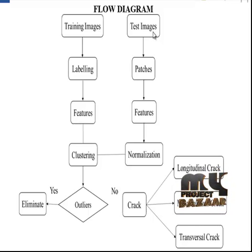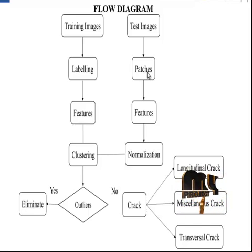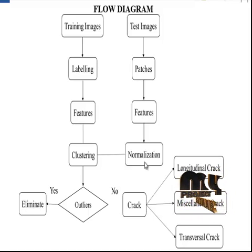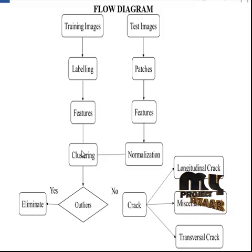In the testing process, test images were obtained and divided into several patches. Features were extracted from the patches — specifically the mean and standard deviations of the patches. The extracted features were saved and then normalized. The normalized features and training image features were then used for clustering.